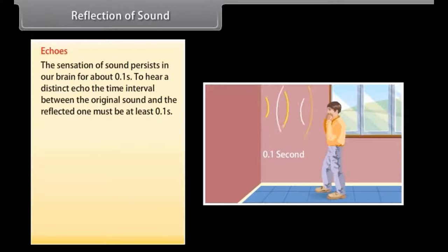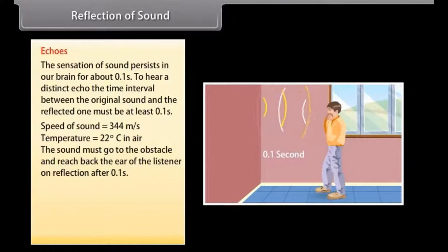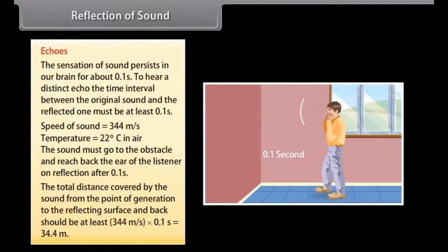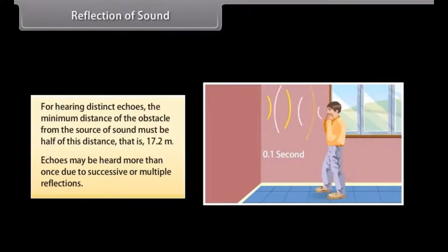To hear a distinct echo the time interval between the original sound and the reflected one must be at least 0.1 second. If we take the speed of sound to be 344 meter per second at a given temperature say 22 degrees Celsius in air the sound must go back to the obstacle and reach back the ear of the listener on reflection after 0.1 second. Hence the total distance covered by the sound from the point of generation to the reflecting surface and back should be at least 344 meter per second into 0.1 second is equal to 34.4 meters. Thus for hearing distant echoes the minimum distance of the obstacle from the source of sound must be half of this distance that is 17.2 meters. This distance will change with the temperature of air. Echoes may be heard more than once due to successive or multiple reflections.